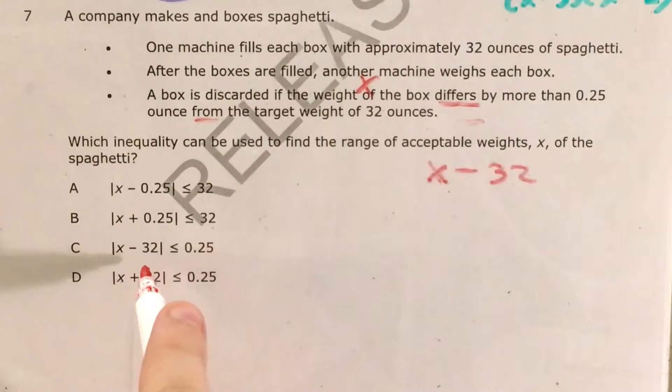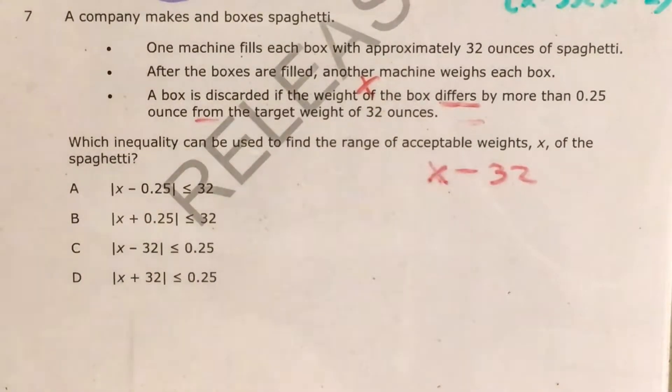The absolute value of x minus 32 is less than or equal to a quarter, and in the context of the problem, it's a quarter of an ounce. So C is my answer, but I'm not going to circle it just yet, because I'm actually going to demonstrate how this whole idea works using something like a number line.